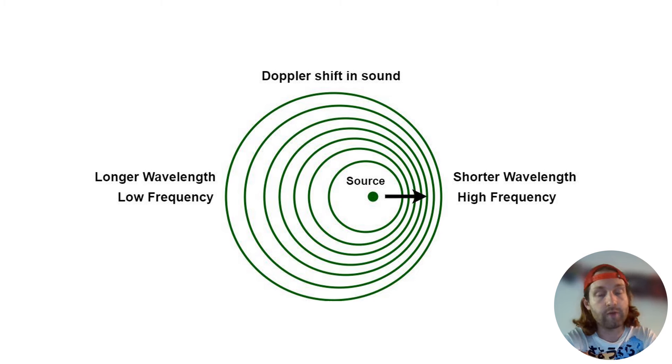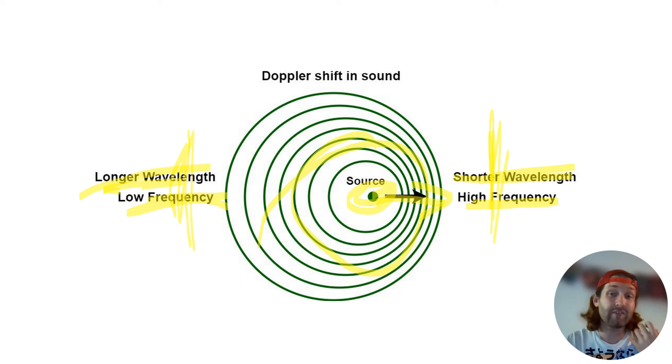As we can see in this diagram here, we've got a source traveling with a direction, and depending on whether we are behind or in front of this traveling source, we're going to get a variation in frequency and wavelength. That's what we're going to get into today, how that applies to sound, and how that also applies to light when we refer to it as redshift.